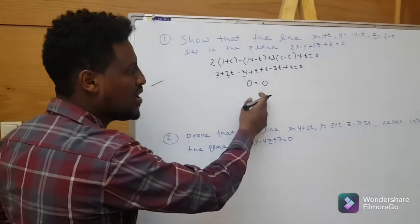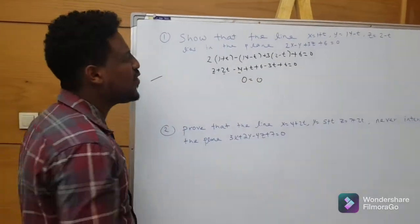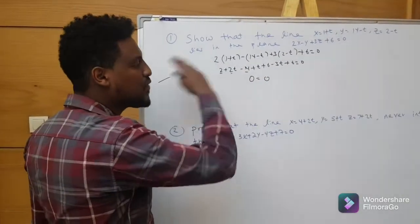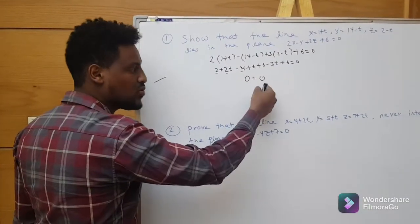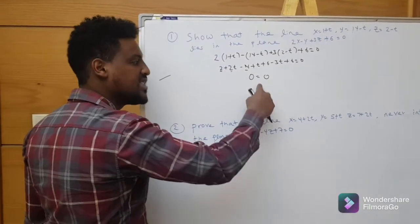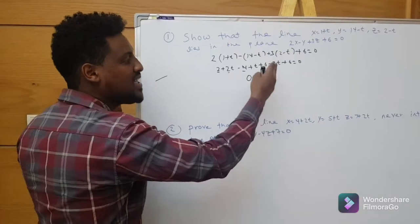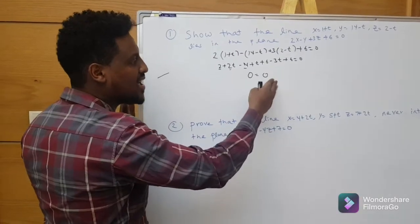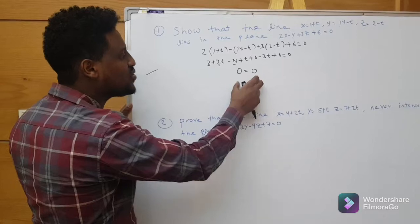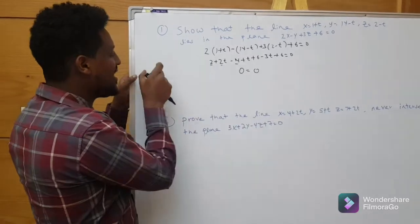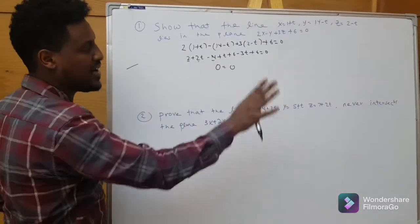0 is equal to 0, for any value of t. That means the equation holds for all t — the line always lies in the plane.